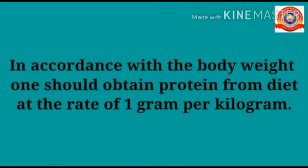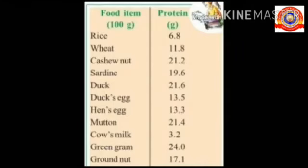In accordance with body weight, one should obtain protein from diet at the rate of 1 gram per kilogram. So if your body weight is 27 kilograms, you need 27 grams of protein per day. Look at the table — from which food items do we get plenty of protein?